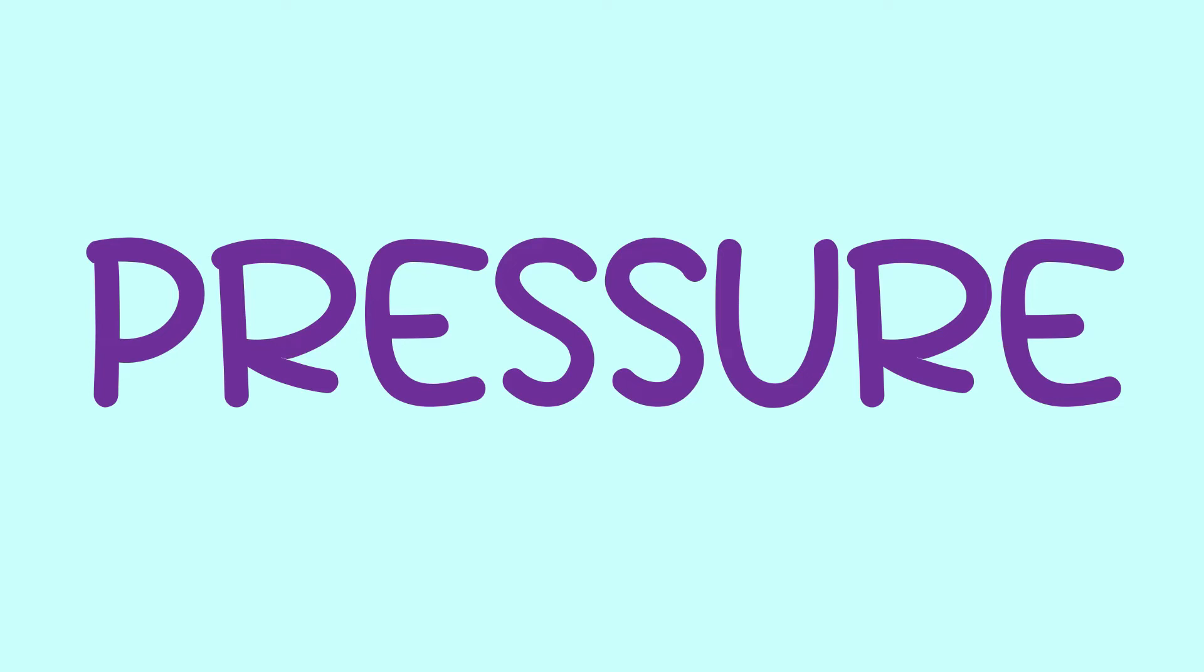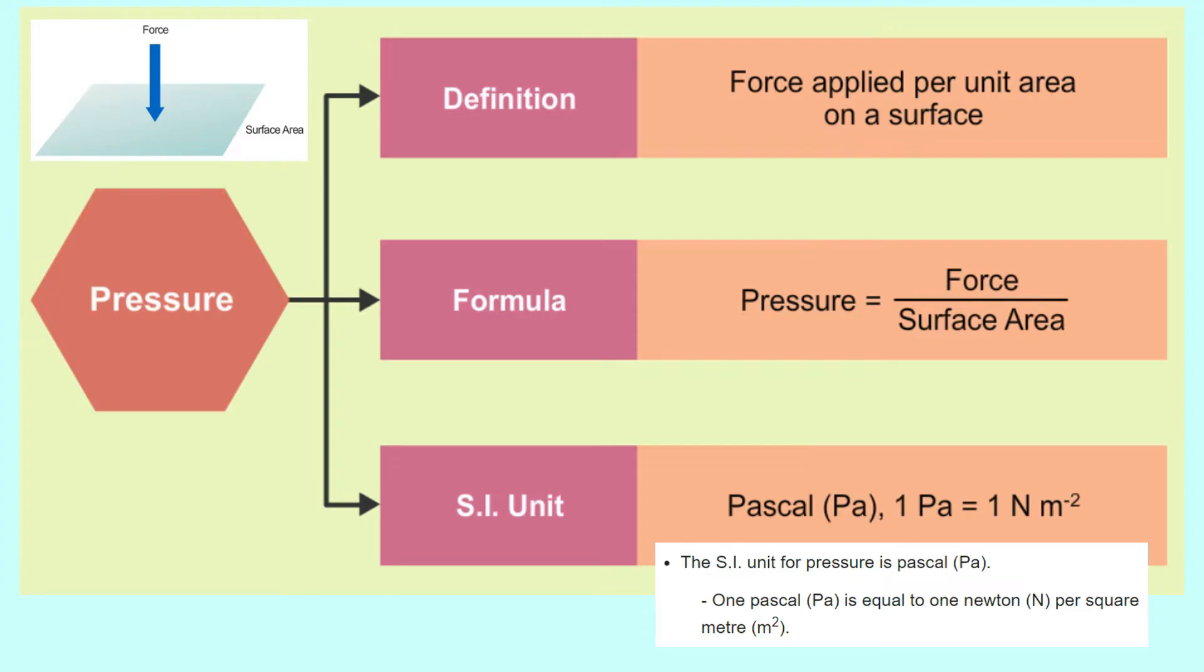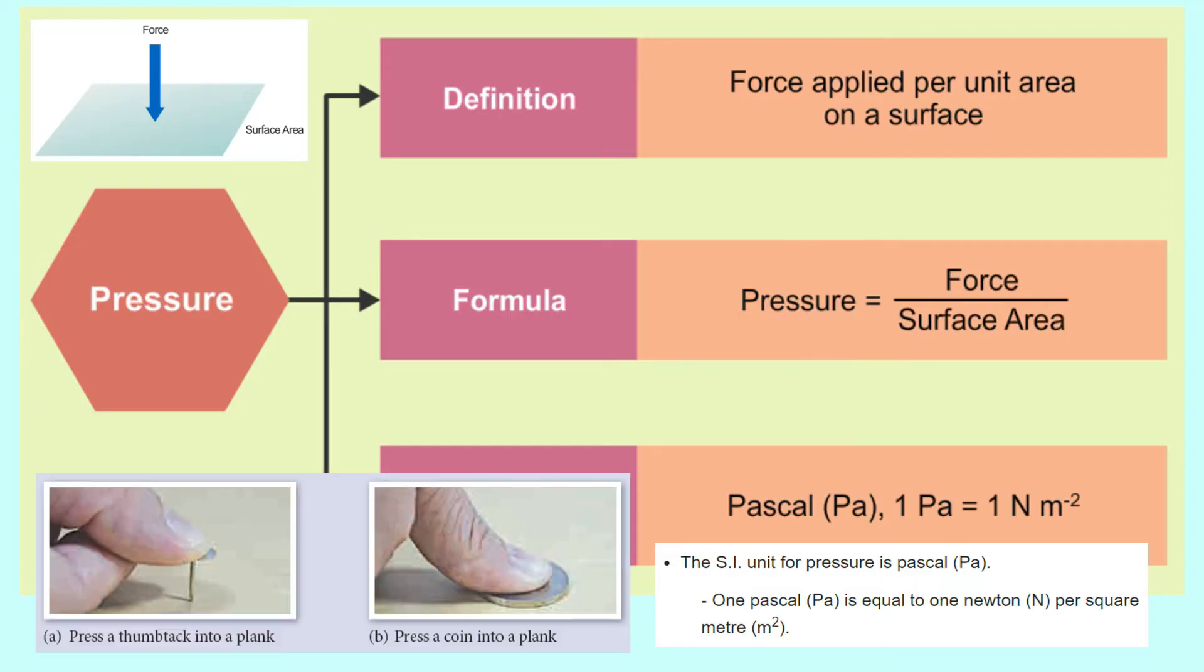Pressure is defined as normal force per surface area. A thumbtack can be pressed into a softboard, but a coin cannot be pressed into a softboard, even though the force given is the same.